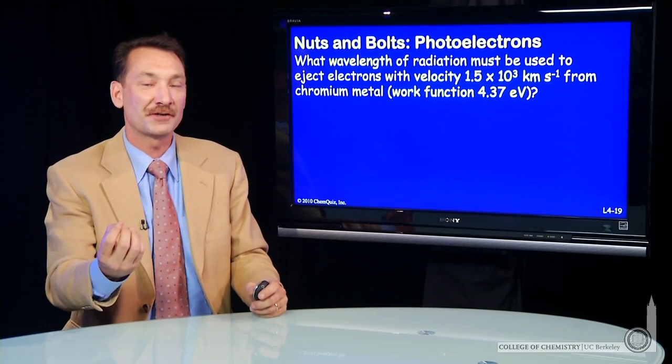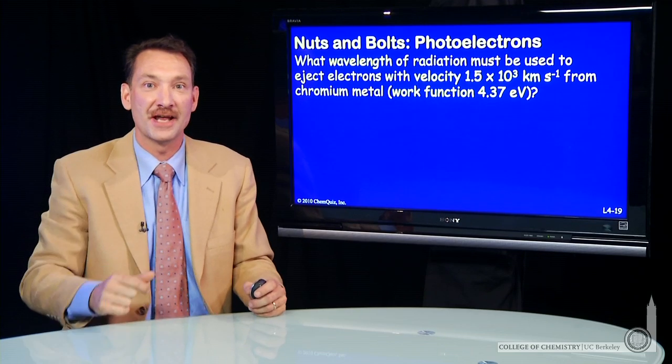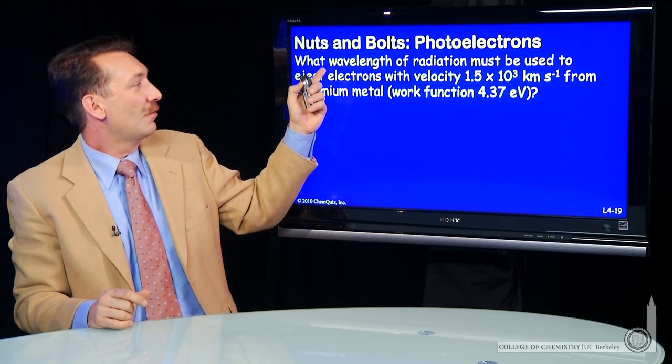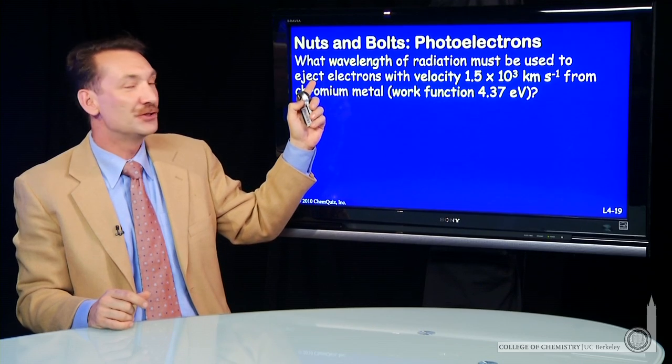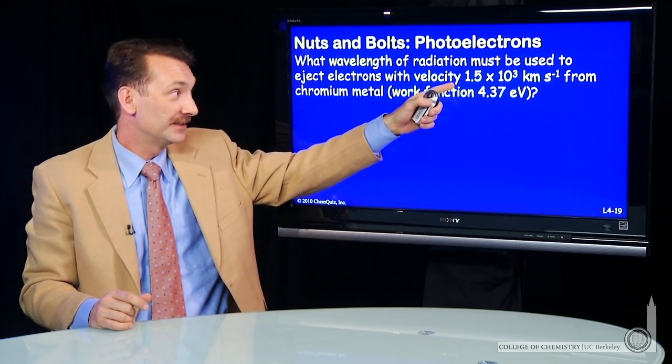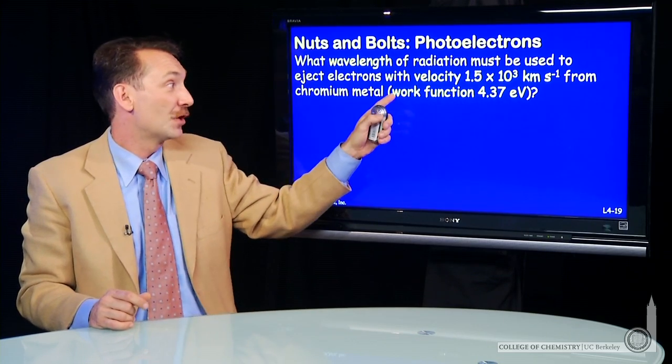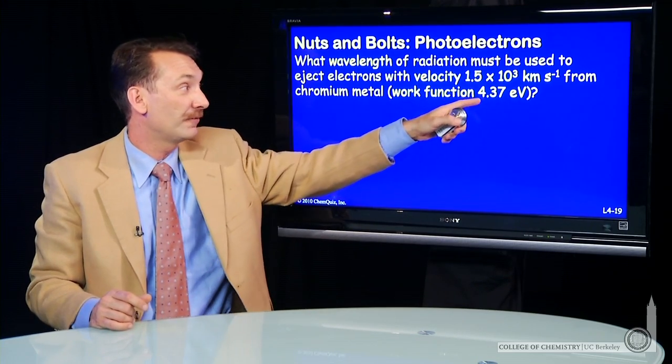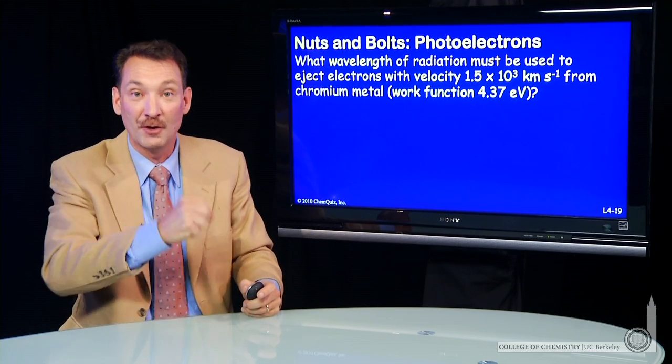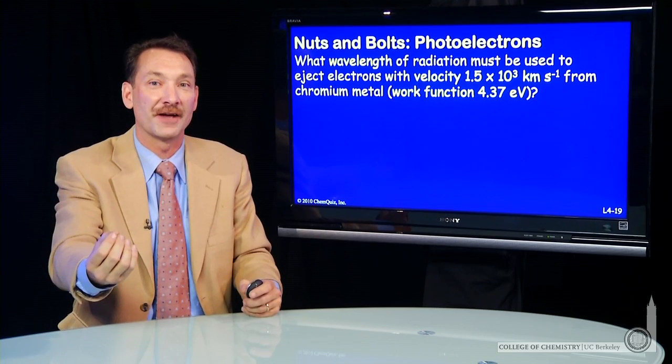Let's do a calculation involving the photoelectric effect, ejected photoelectrons, and photons of a certain energy hitting a metal. We'll take the question: what wavelength of radiation must be used to eject electrons with a velocity given from chromium metal with a work function that's given? So this work function for chromium metal, 4.37 electron volts, is how strongly chromium holds on to its electrons. So we have to say, well, what is the photoelectric effect?